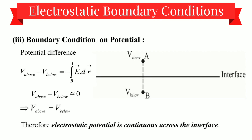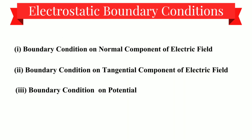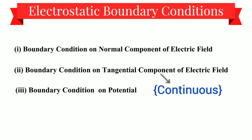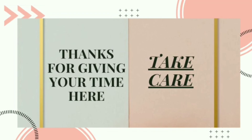Overall: the boundary condition on the normal component gives a discontinuity of σ upon ε₀, while the boundary condition on the tangential component is always continuous across the interface. Similarly, the boundary condition on the potential is also continuous across the interface. That's it for today's video. Hope you found this video productive. Thanks for giving your time here. Take care.